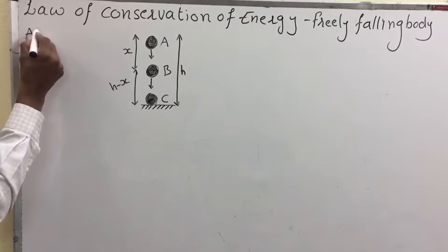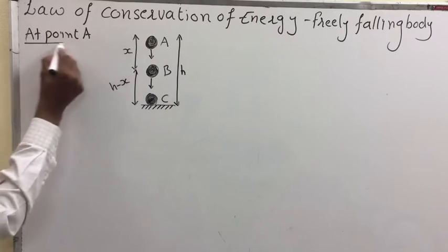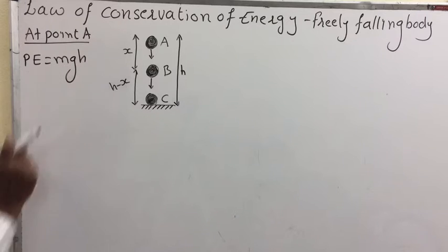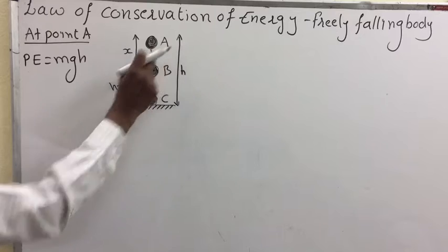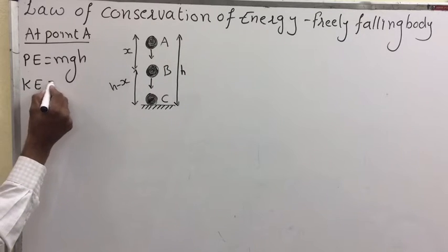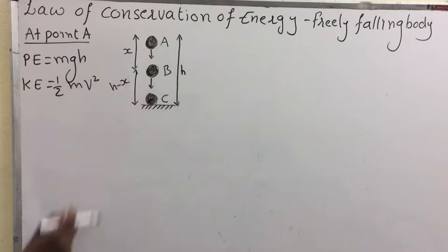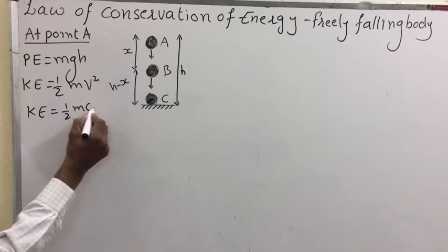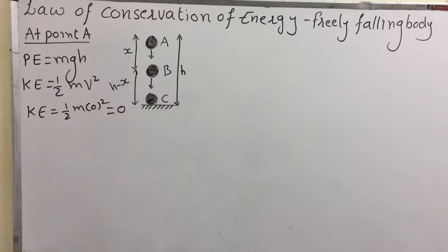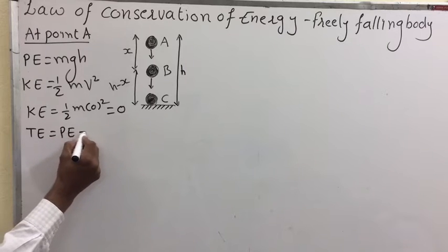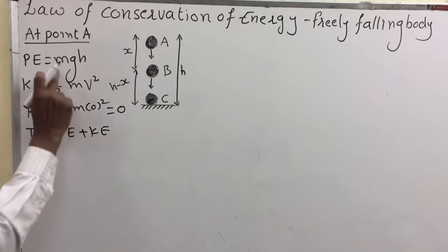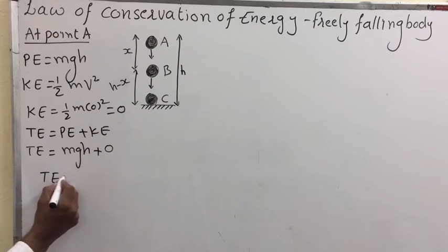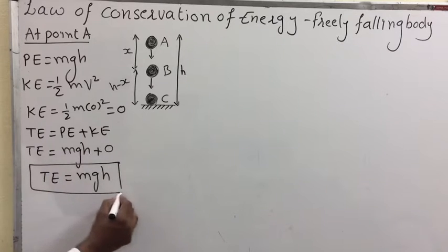At point A, the potential energy formula is mgh, where m is mass, g is acceleration due to gravity, and h is the height. For kinetic energy, the formula is half mv squared. Since the object starts from rest, velocity is zero, so kinetic energy equals zero. Therefore, total energy at point A equals potential energy plus kinetic energy, which gives mgh plus zero, so total energy at point A is mgh. This is equation number one.